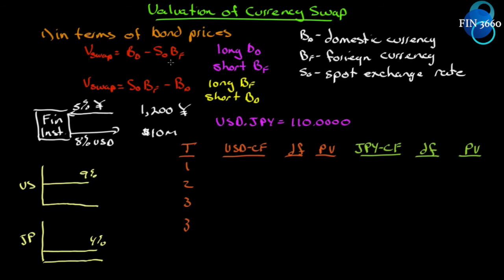B sub D is the domestic currency bond, B sub F is the foreign currency bond, and S naught is the spot exchange rate. When we read this first one, the minus sign is in front of the foreign bond, so clearly we're long domestic and short foreign. On this one, the minus sign is in front of the domestic bond, so we're long foreign and short domestic. We'll set up our scenario here.